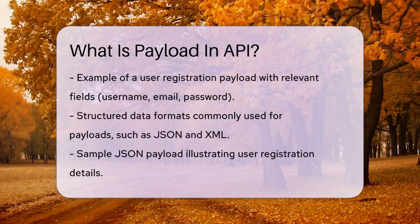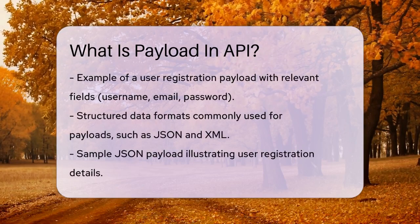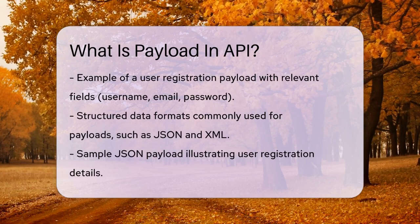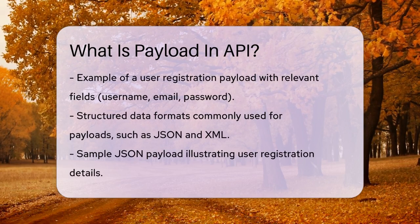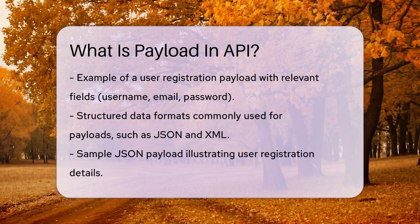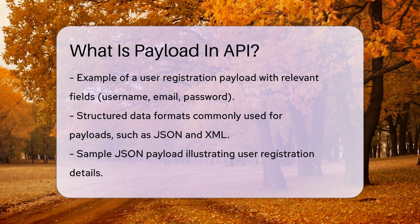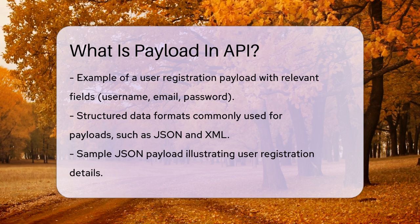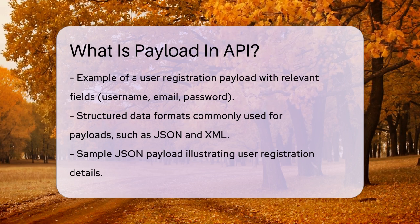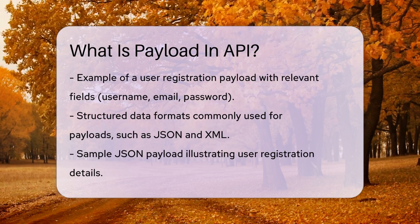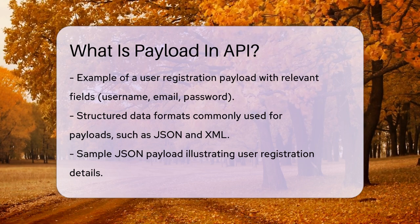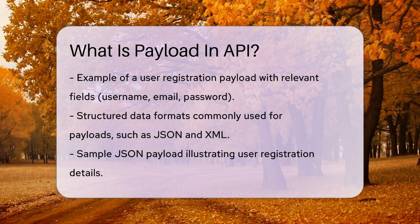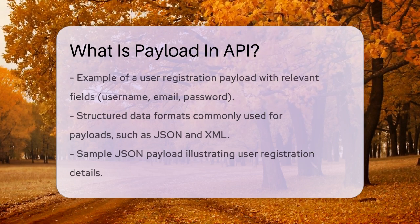Here's an example of what a JSON payload for user registration might look like: username: John Doe, email: johndoe@example.com, password: securepassword123, profile: first name: John, last name: Doe, age: 30, preferences: newsletter: true, notifications: false. This payload is sent in the body of the HTTP request, and it tells the server exactly what information is needed to create the new user account.